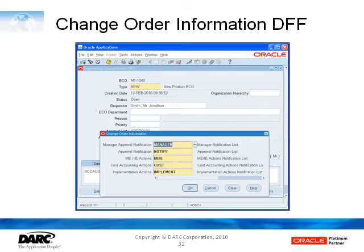We then have a notify list — these are the people that need to be notified when the ECO is approved. We have MEIE actions, which are essentially the creation of the bill of material and the routing for this item, or the changes to the bill of material and routing. So now we're actually routing work to somebody; they'll get a notification saying they need to take their MEIE actions on this change order.